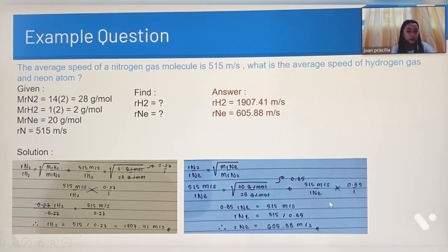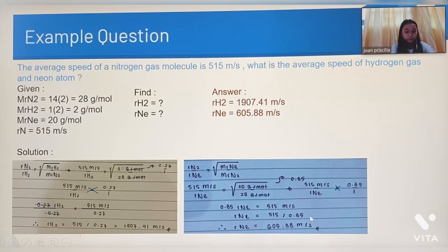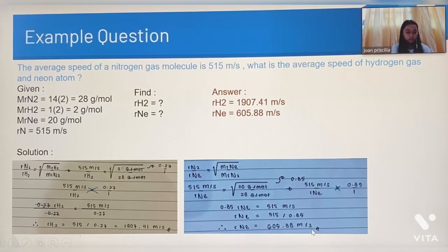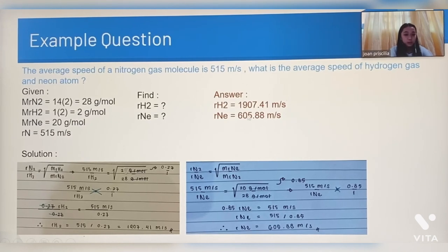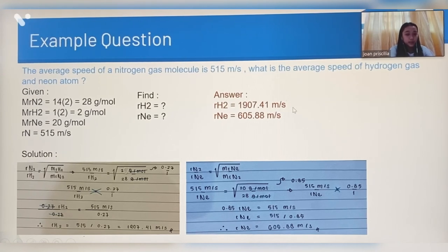We cross-multiply, getting 0.85 R(Ne) equals 515 m/s. To find R(Ne), we divide 515 by 0.85, so R(Ne) equals 605.88 meters per second. The answer: the average speed of hydrogen gas is 1,907.41 meters per second, and the average speed of neon atom is 605.88 meters per second.